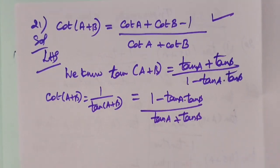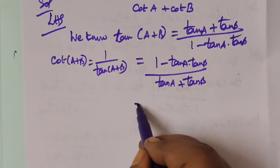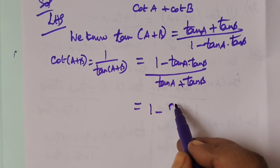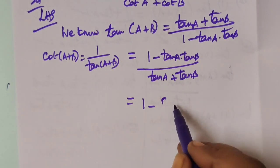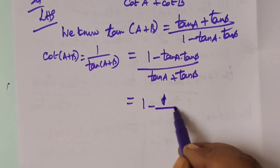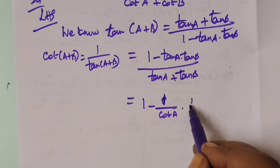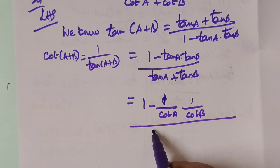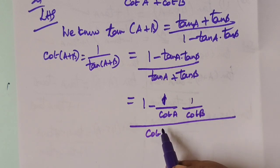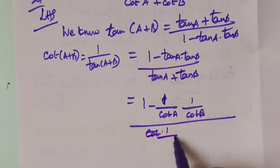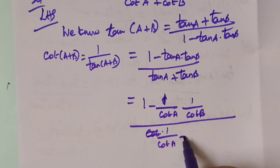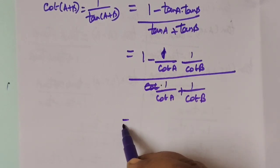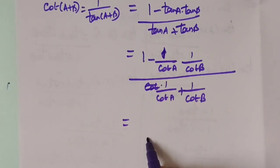Now let's prove it. That is equal to 1 - tan a · tan b over (tan a + tan b), where tan a = 1/cot a and tan b = 1/cot b. Take the LCM and cross multiply.